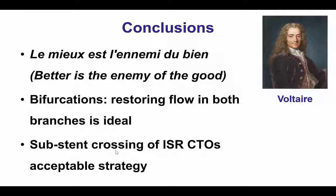When there is a bifurcation at the distal cap, it is important to restore flow in both branches if possible, as this provides better relief of ischemia for the patient and also increases outflow, potentially reducing the risk of restenosis. Finally, in cases of in-stent restenosis CTOs where no other strategy is available — and in this case we could not do antegrade wiring and retrograde was not appealing — crossing the restenotic lesion subintimally and then stenting around and crushing the previous stent is an acceptable strategy, with studies now showing relatively favorable outcomes.